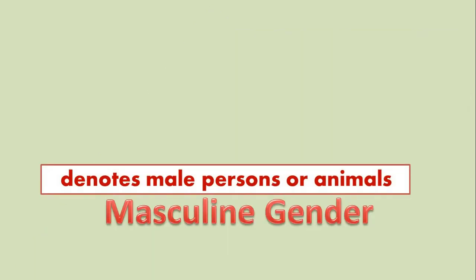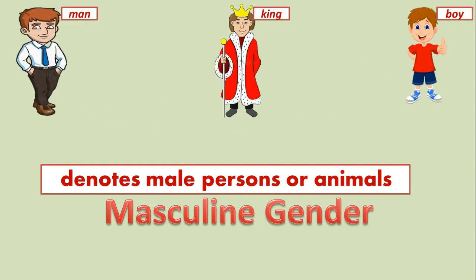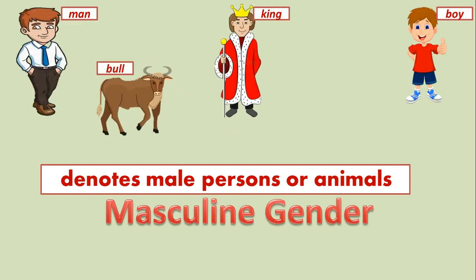Masculine gender. Masculine gender denotes male persons or animals — any male member. A noun that is the name of a male person or animal is said to be masculine gender. For example: king, man, boy, bull, and horse.